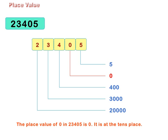The place value of 0 in 23,405 is 0. It is at the tens place. The place value of 4 in 23,405 is 400 as it is at the hundreds place.